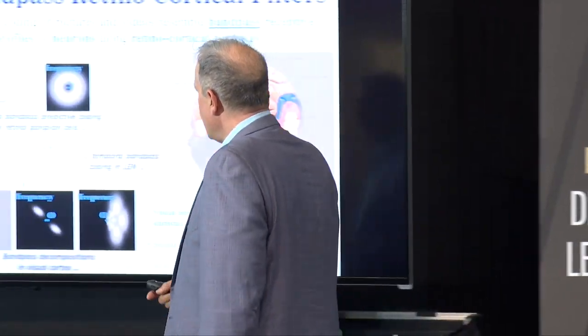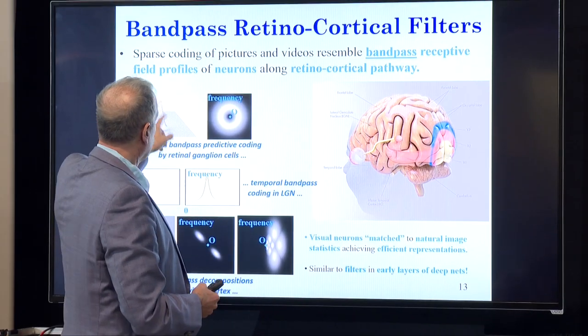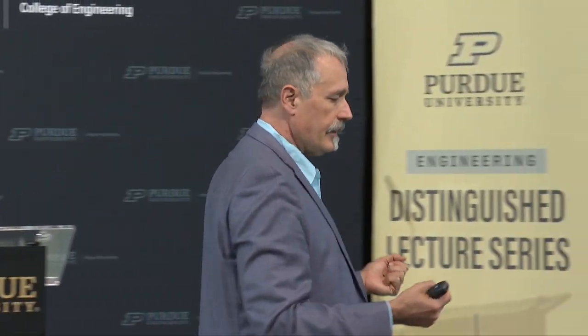Long ago in the 1950s, Horace Barlow put forth the so-called efficient coding hypothesis. He said: in the early parts of processing, it's all devoted to some kind of compression — coding of the signal so it becomes much smaller and manageable. When we look at the brain, the ganglion cells in the retina can be modeled as linear bandpass filters. They tend to be center-surround, looking like differences of Gaussian filters. In the midbrain in the lateral geniculate nucleus, temporal processing happens, which is also bandpass.